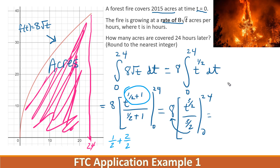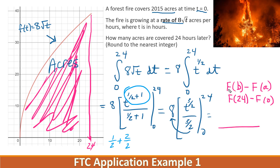Just pick up your calculator, but remember what you're doing: f of b minus f of a. In this example you're doing f of 24 minus f of 0. Once you work that out, notice it says how many acres are covered 24 hours later — you're going to take whatever answer you get and add it to how many acres have already burned. Be sure you finish that one and get me an answer.